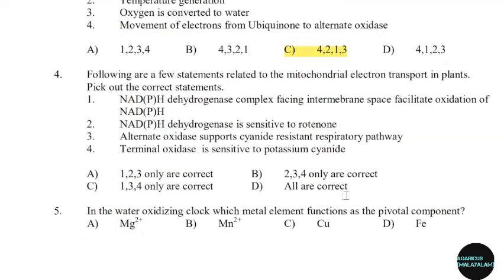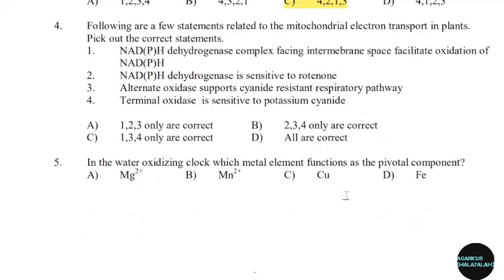4th question: Following are a few statements related to the mitochondrial electron transport chain. Pick out the correct statement. Correct answer: Option C — 1, 3, 4 only.